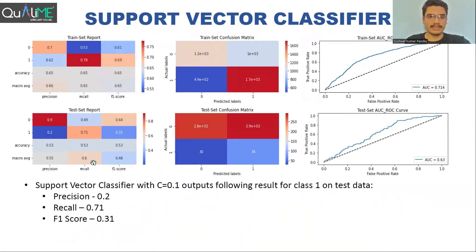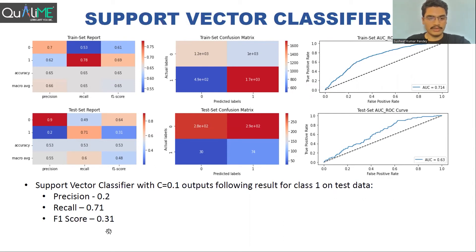We also tried some more complex algorithms. First, we used the Support Vector Classifier (SVC), which is comparatively more complex than logistic regression. For class one on the test data, the precision was 0.2, recall was 0.71, and F1 score was 0.31.